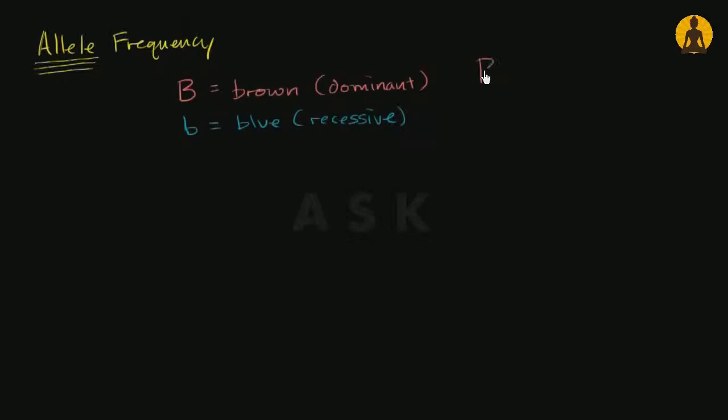So once again, this is review. Someone who has one of the big B alleles, the brown alleles, it doesn't matter what their other allele is going to be because it's either going to be another brown or it's going to be a blue. They're going to show brown eyes.